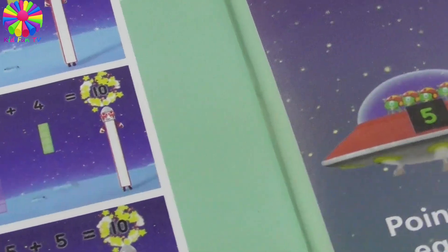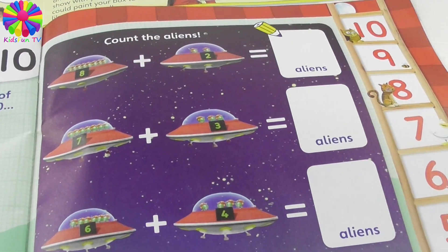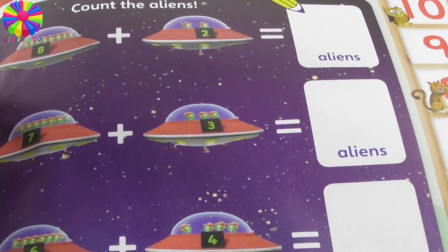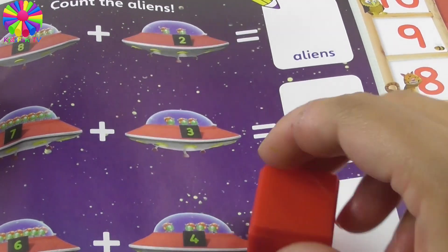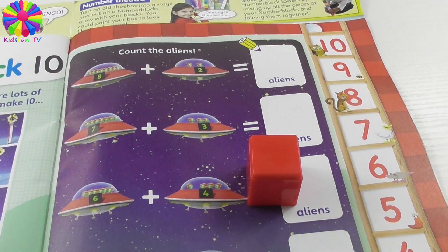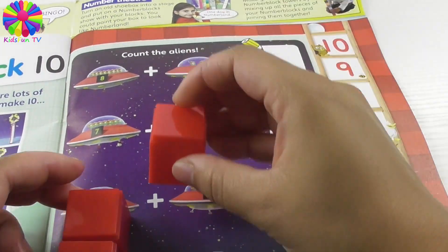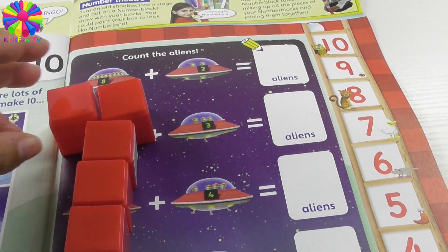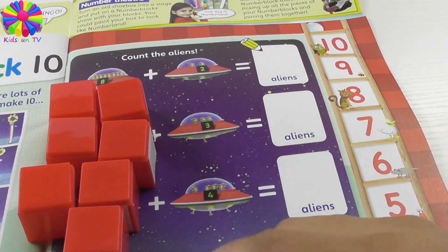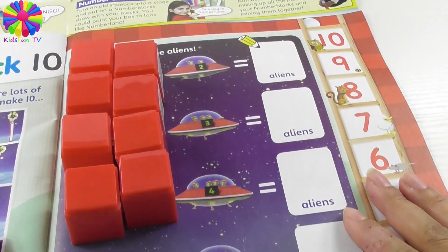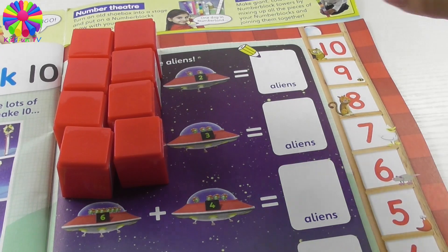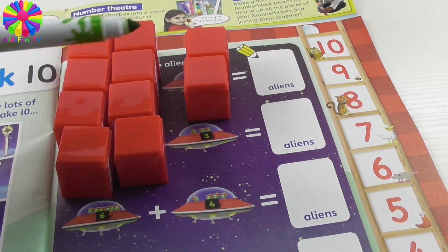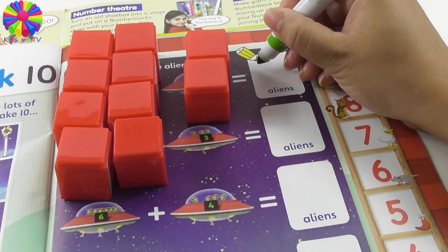Here we're going to count the aliens. We have eight aliens here: one, two, three, four, five, six, seven, eight. And two aliens there. So how many aliens do we have in total? Eight plus two is ten — we have ten aliens!